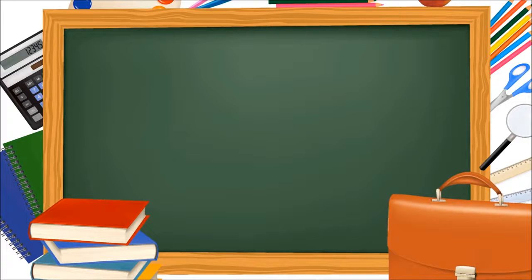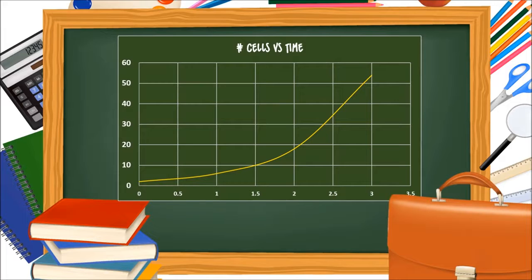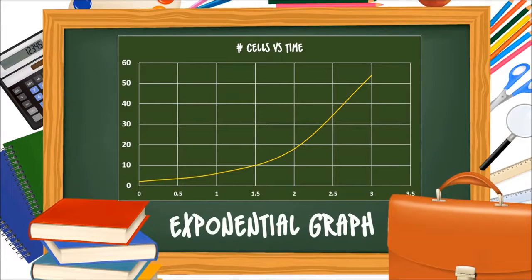Let's now put our data in a table of values, where we'll let x represent minutes and y represent how many cells we have. If we were to plot a graph, we'll get something like this. A graph of this shape is known as an exponential graph, and so we have an exponential relationship between each of the plots.